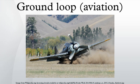Ground loops may occur when landing on muddy ground, wet pavement, or frozen surfaces, especially if there are puddles or patches. They may also occur when an aircraft departs a paved surface, for example after an engine failure in multi-engine airplanes produces asymmetric thrust. Another common cause is failure of a tire or wheel brake, causing a loss of directional control.